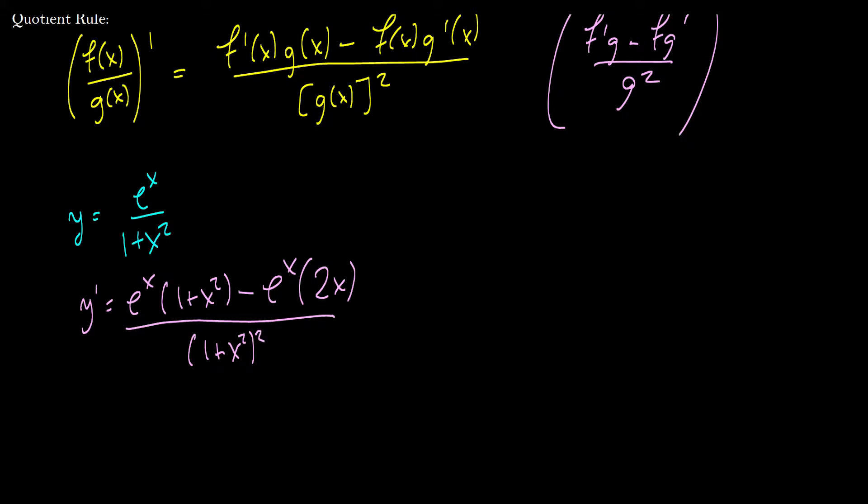I'm not going to bother factoring this out or expanding it rather because I doubt it's going to simplify anything. In fact, if I'm lucky, something will cancel on top. So expanding it's not going to help us a lot. Okay, so let's simplify this further. Well, we can factor out an e to the x and then we get 1 plus x squared minus 2x all over 1 plus x squared, all squared.